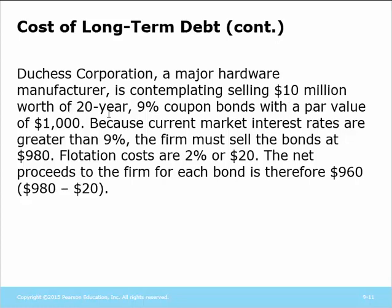Here we have a company selling $10 million worth of 20-year debt, 9% coupons with a par value of $1,000. Because current market interest rates are greater than 9%, the company has to sell the bonds for less than $1,000 — they'll sell at $980. Flotation costs are 2% of par, or $20. So the net proceeds is $960.